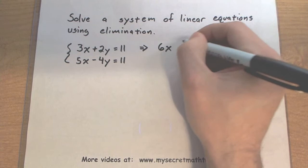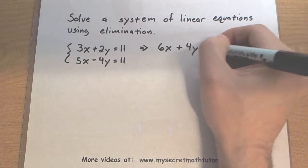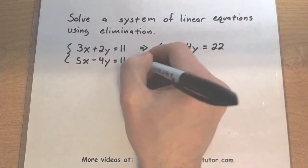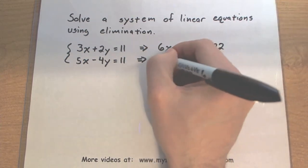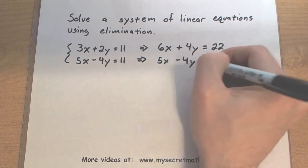So 3 times 2 is 6x. This will give us 4y. 2 times 11 is 22. Now this next equation, I'm not going to change whatsoever. I'm just going to leave it as 5x minus 4y equals 11.